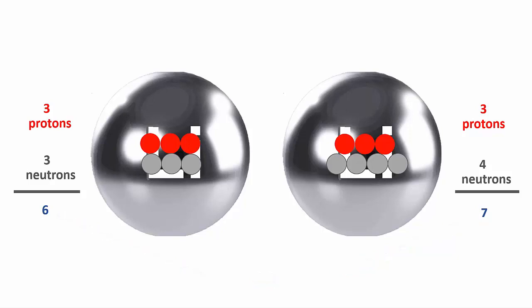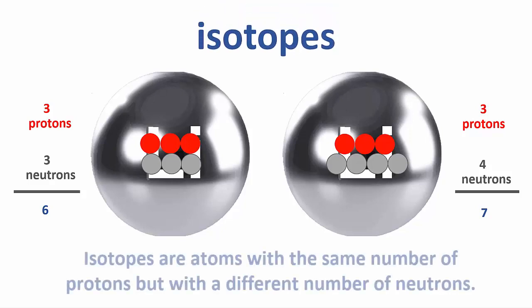When atoms of the same kind have a different number of neutrons, we call them isotopes. So we can say that isotopes are atoms with the same number of protons, but a different number of neutrons.